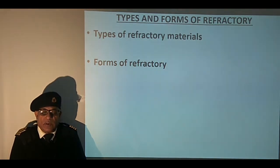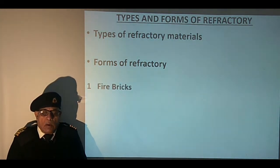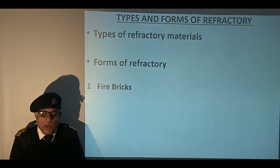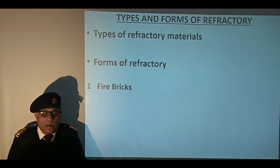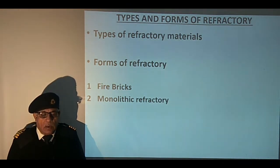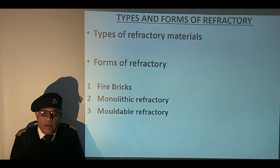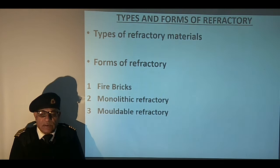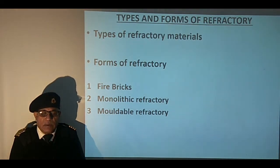Refractory may be available in one of the following forms. Fired bricks are made from natural clay containing alumina, silica and quartz; they are shaped into bricks and fired in a kiln. Monolithic refractory is supplied in the unfired state, installed in the boiler and fired in situ when the boiler is commissioned. Moldable refractory is used where direct exposure to radiant heat takes place; it must be pounded into place during installation and is made from natural clay added with calcified fire clay which has been crushed and graded.